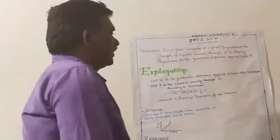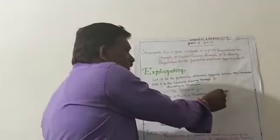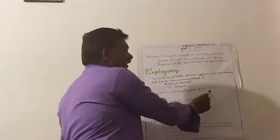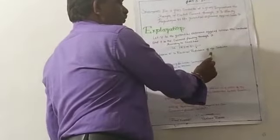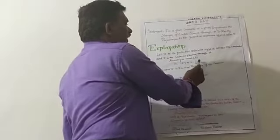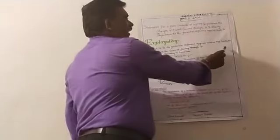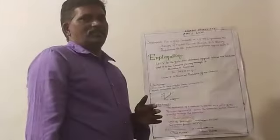In the second graph, taking voltage on the y-axis and current on the x-axis, you also get a straight line which passes through the origin. The slope of this straight line equals tan theta, where theta is the angle made with the x-axis. That equals V by I, and V by I is equal to R. So here I by V equals one by R, and V by I equals R.